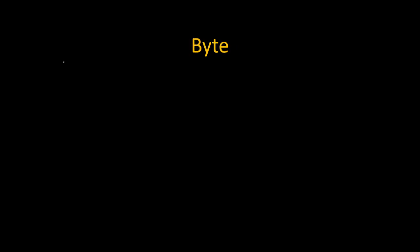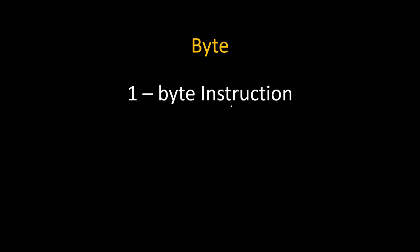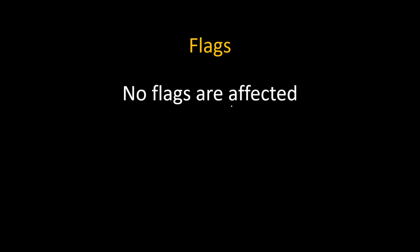Since we are transferring data from the accumulator to memory, this instruction belongs to the data transfer group. How many bytes is this instruction? Since there is no digit written in the STAX instruction, it will be a one-byte instruction. You can remember this rule: if no digit is given in the instruction, it will be a one-byte instruction. This instruction will not affect any flag because it belongs to the data transfer group — flags are only affected during arithmetic and logical operations.